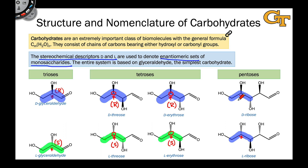With the R configuration, this is D-ribose, and with the S configuration at that stereocenter, this is L-ribose. We'll revisit D and L when we look at Fischer projections here in a second.